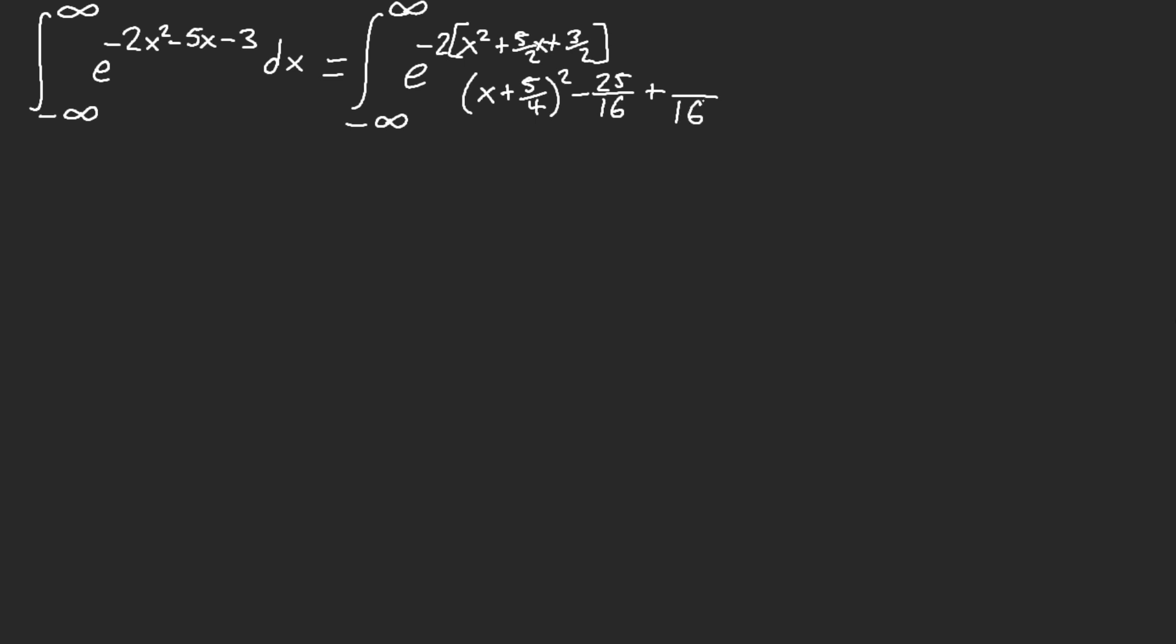24, oh wow, okay. So this is like negative 1 over 16. So what we have here, so we have e to the negative 2 of x plus 5 fourths squared minus 1 over 16.